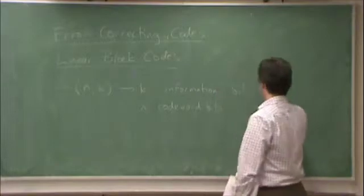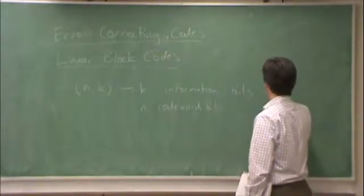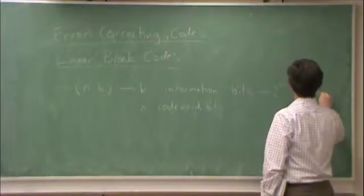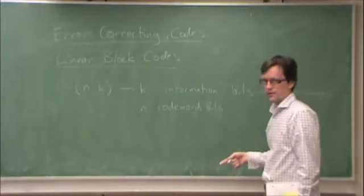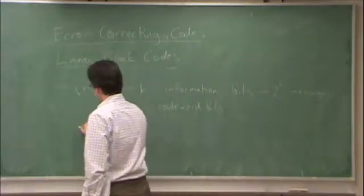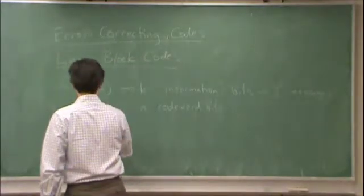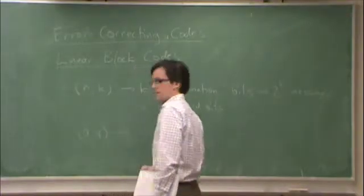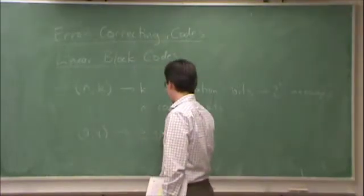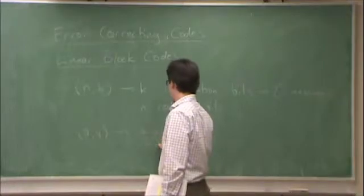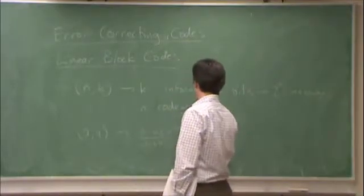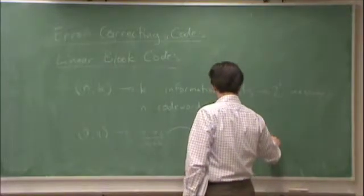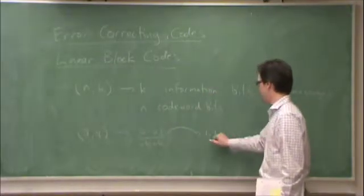k information bits means 2 to the power of k messages that can be enumerated in k bits. For example, a 7-4 code: we would take 4 information bits, so a 4-bit message, and map it to a 7-bit code word.